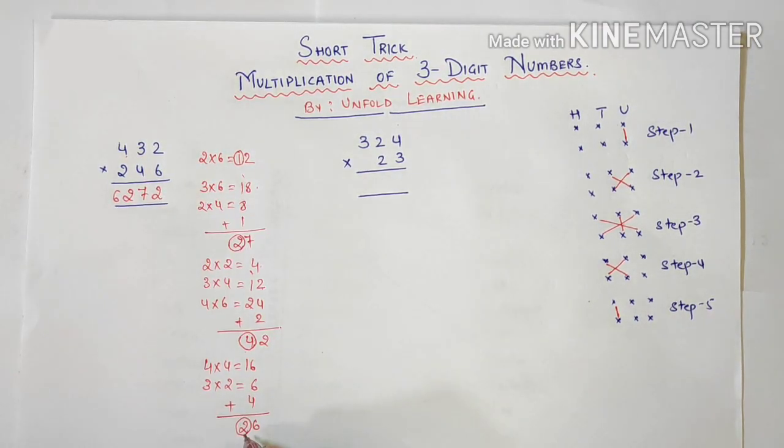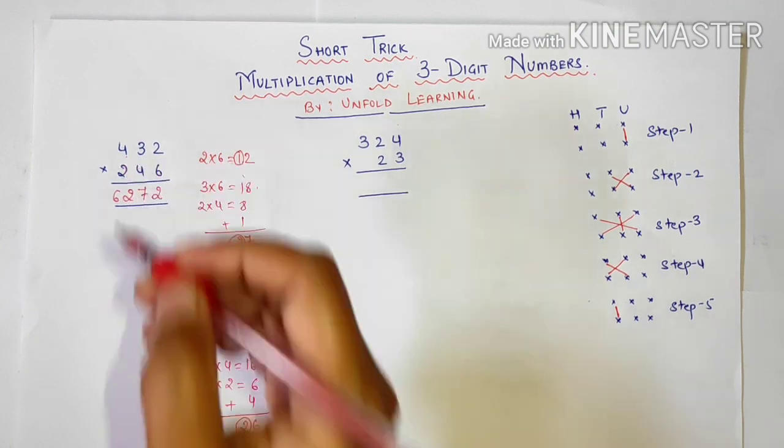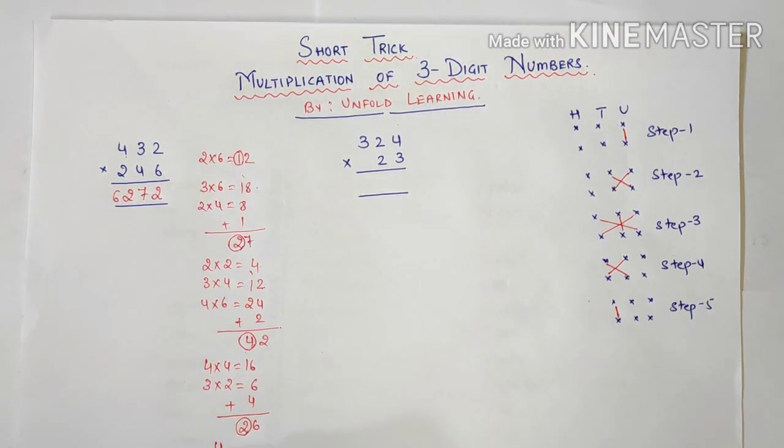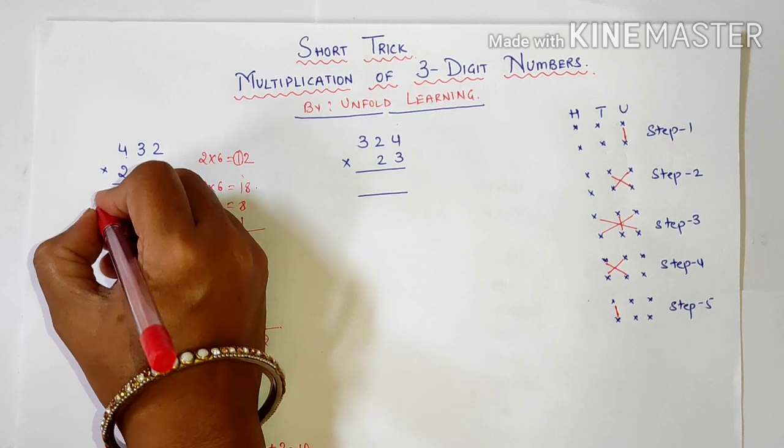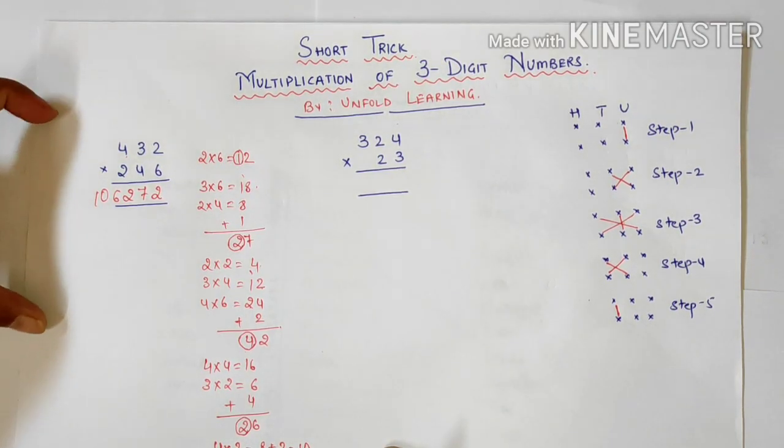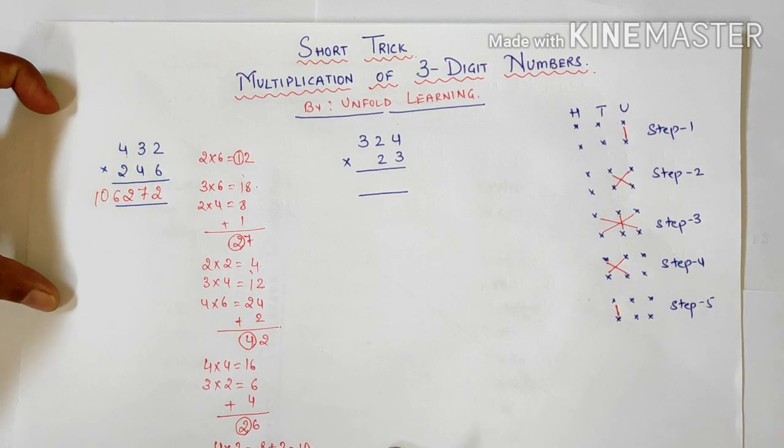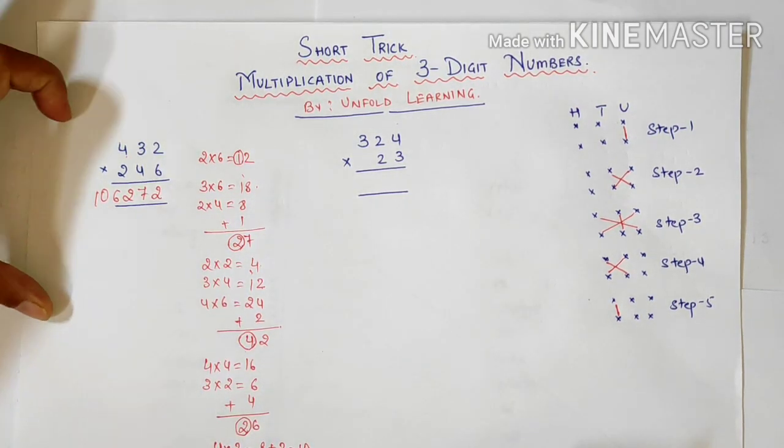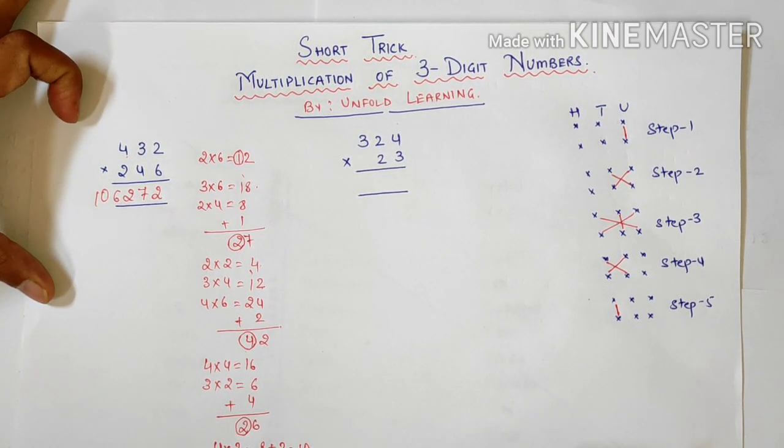2 ko mein carry over me le jaungi. And last step is 4 ko 2 ke saath multiply karna, which is hundreds to hundreds place. So 4 into 2 is 8. Plus 2 is 10. So your answer is 106272. So with this procedure you can multiply 3-digit numbers in single line.